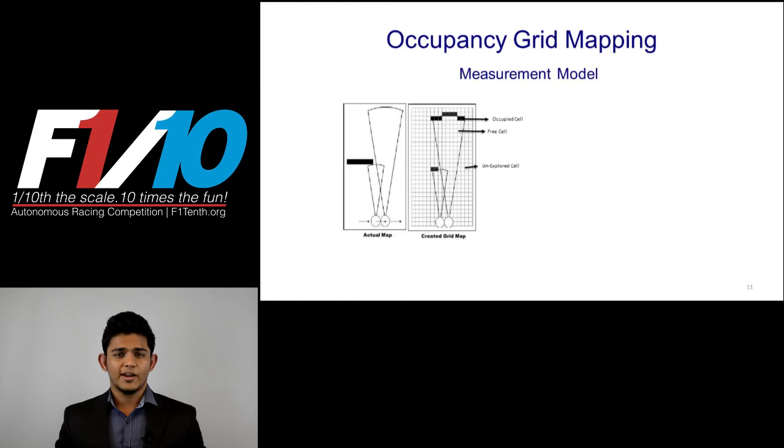The cells where we get confirmed LIDAR hits over several iterations are considered occupied cells and they build the walls or occlusions for the map. The cells considered as free cells are the ones where the LIDAR scans had the chance to pass through but did not get blocked away by any obstacle. And the third type obviously corresponds to the cells where the LIDAR scans have never been able to explore anything.